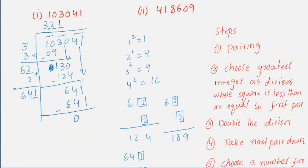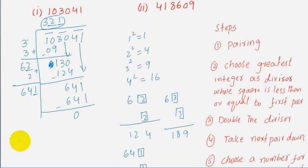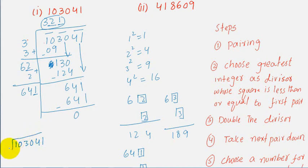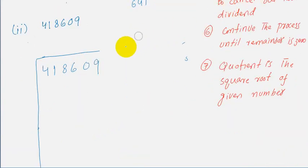Our quotient is 321, and this quotient is the square root of our given number. Therefore, the square root of 103041 is equal to 321. Now we try another problem.